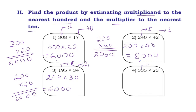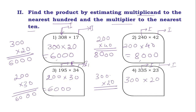Next: 335 × 22. Estimating 335 to the nearest 100: tens digit is 3 — first case, so estimation is 300. Estimating 22 to the nearest 10: unit digit is 2 — first case, estimation is 20. 300 × 20: 20 × 0 = 0, 20 × 3 = 60, so the answer is 6000.